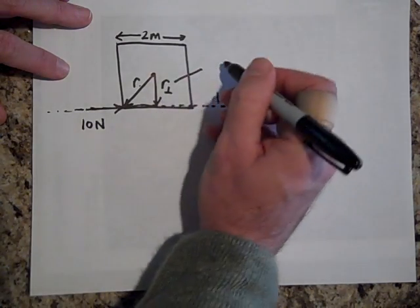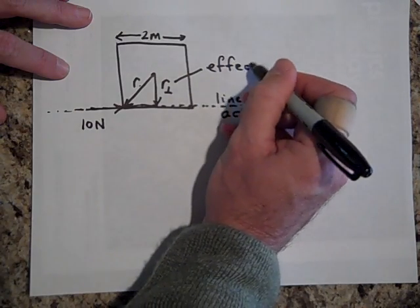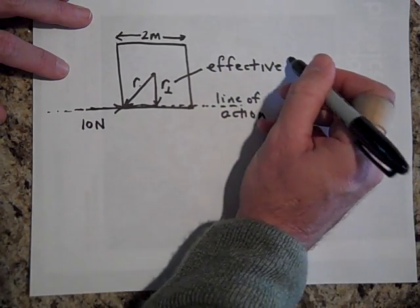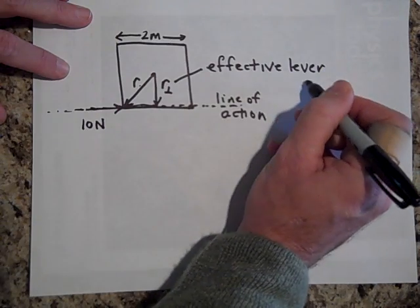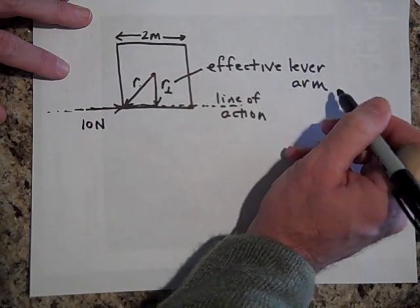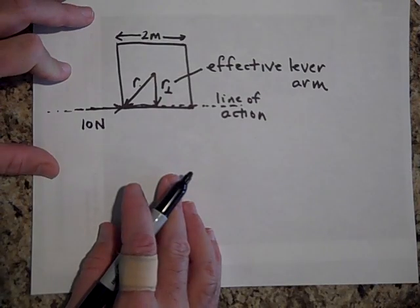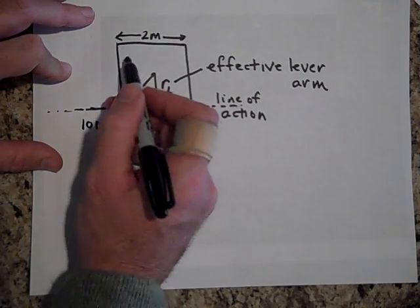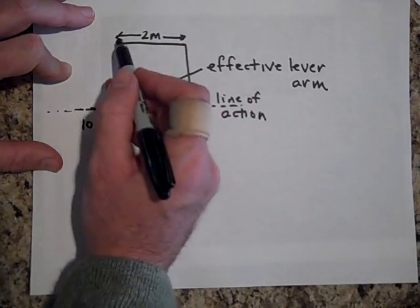That's called, that has a name. It's called the effective lever arm. And it's just much easier to compute the torque for this type of problem by just saying, well, if this is two meters, then that's two meters. If it's a square, I want this to be a square.